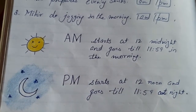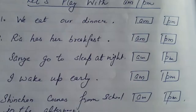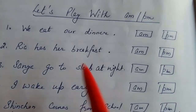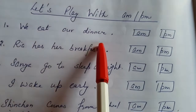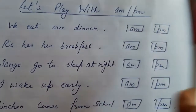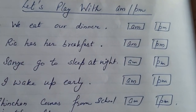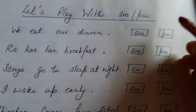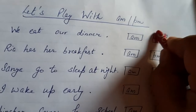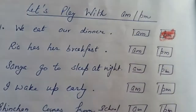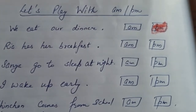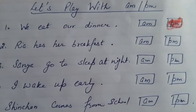So now let us play AM and PM! First one: we eat our dinner. So when do we have our dinner — AM or PM? It will be PM. We will mark the color here at PM.